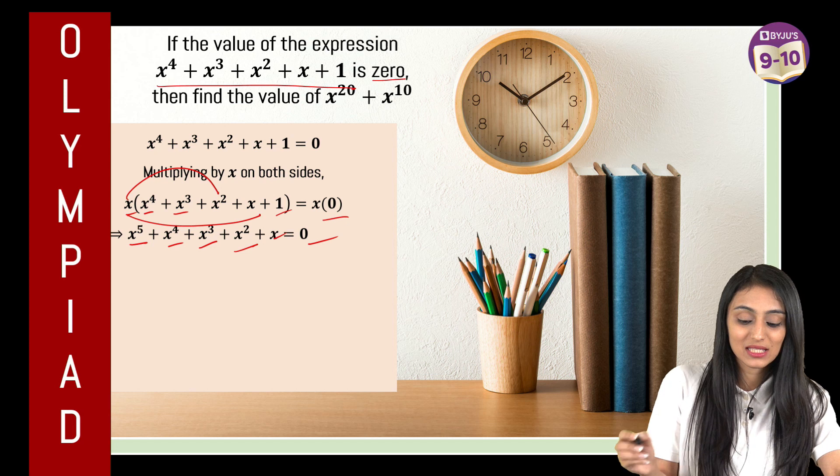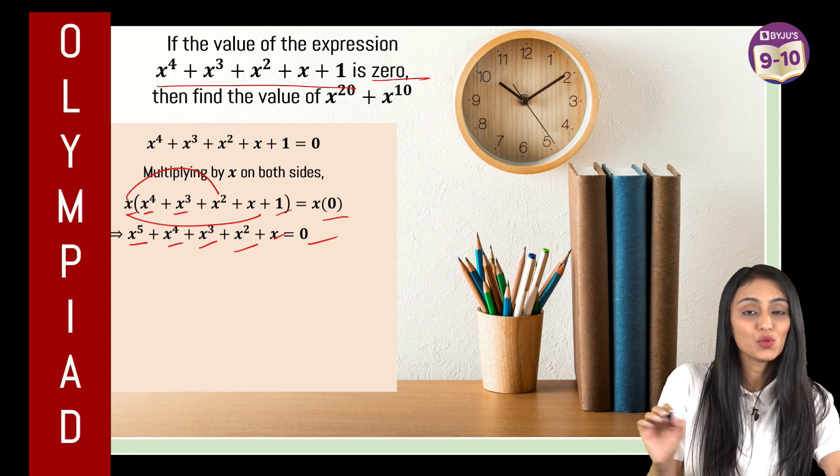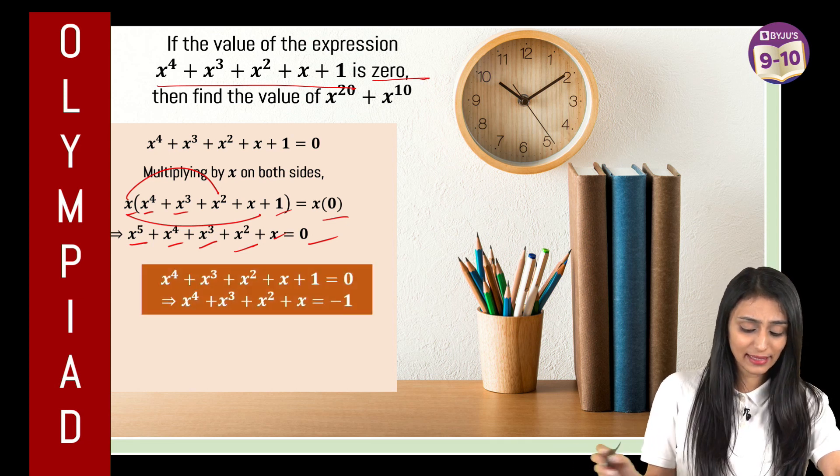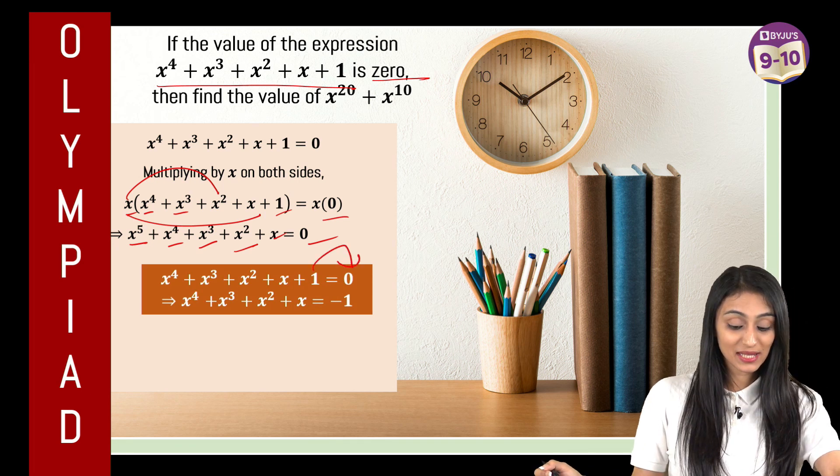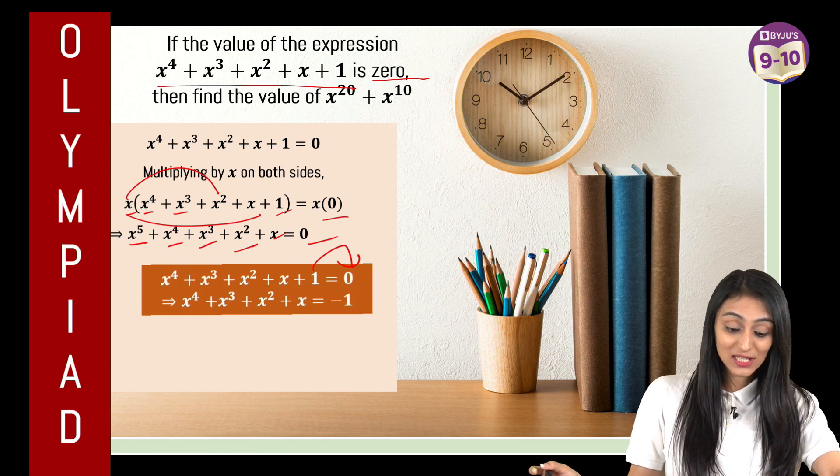Now from here, we are already given that the value of this much part is actually equal to 0. So if I take this 1 to the other side, the value of x to the power 4 plus x cube plus x square plus x is going to be equal to minus 1.